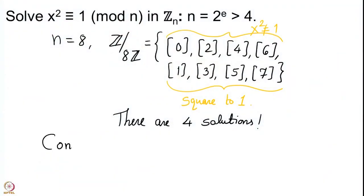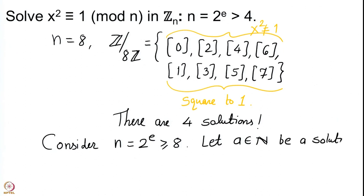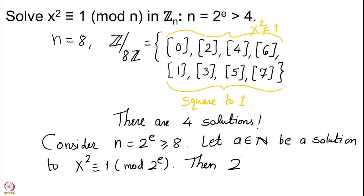Consider n = 2^e with e such that 2^e ≥ 8. Let a in the natural numbers be a solution to x² ≡ 1 (mod 2^e). Then 2^e divides a²−1 = (a+1)(a−1). Since 2 divides 2^e which divides a²−1, we see that a²−1 is even, so a² is odd, and therefore a must be odd.